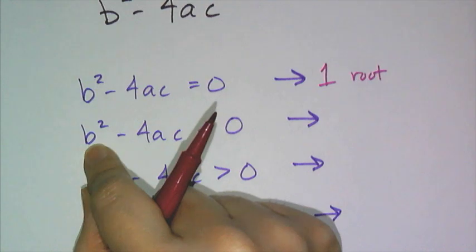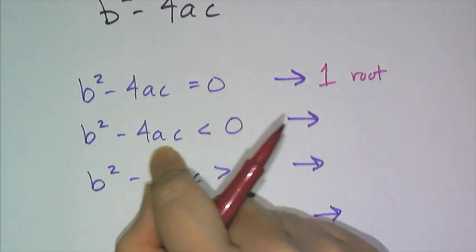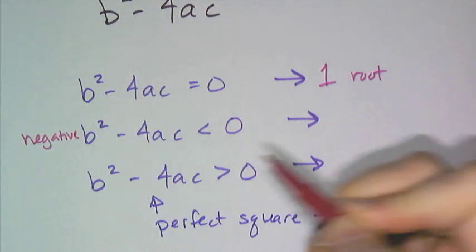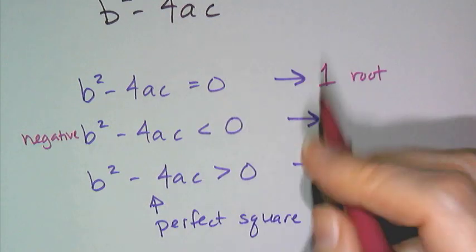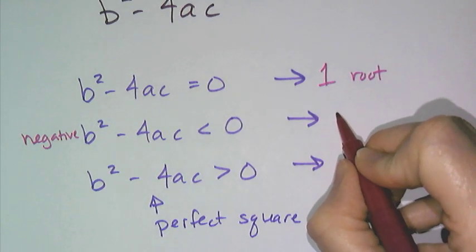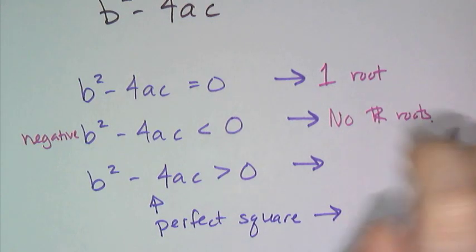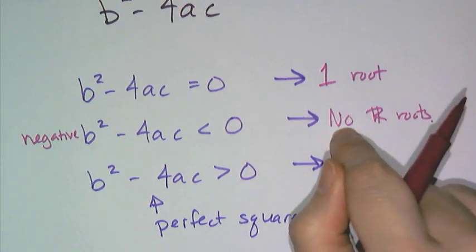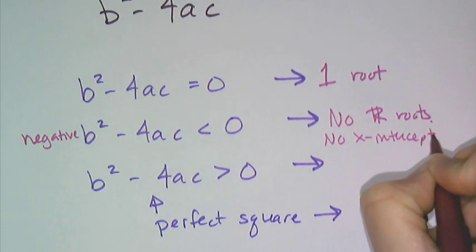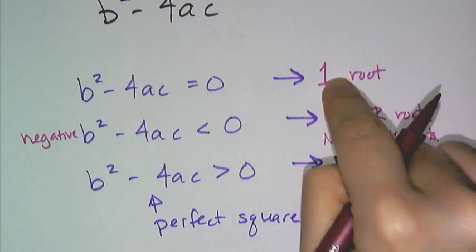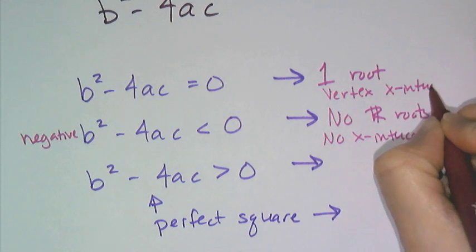And so now let's look at b squared minus 4ac being less than 0. Well, less than 0 means this thing is negative and if I have a negative number under the square root, that means the square root is an imaginary number and therefore I have no real roots. Now I have imaginary roots, I have two imaginary roots and what this means for the graph is no x-intercepts. And for the one root, that means my vertex is my x-intercept.